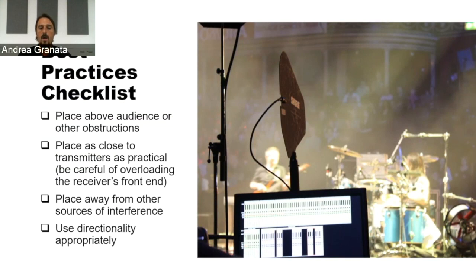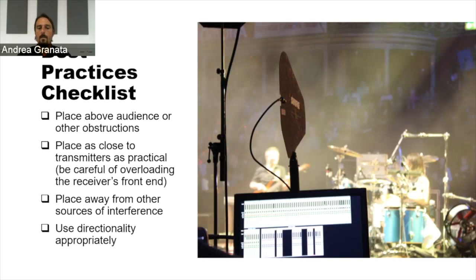To summarize antenna placement: place antennas as high as possible, above the audience and any obstructions. Keep transmitters and receiving antennas as close as practical — the minimum distance between a transmitter and receiver antenna should be around three meters, as closer than that can cause issues. Place antennas away from other RF sources and interference. Use directional antennas not only to point toward desired signal sources but also to reject unwanted signals that raise the noise floor.